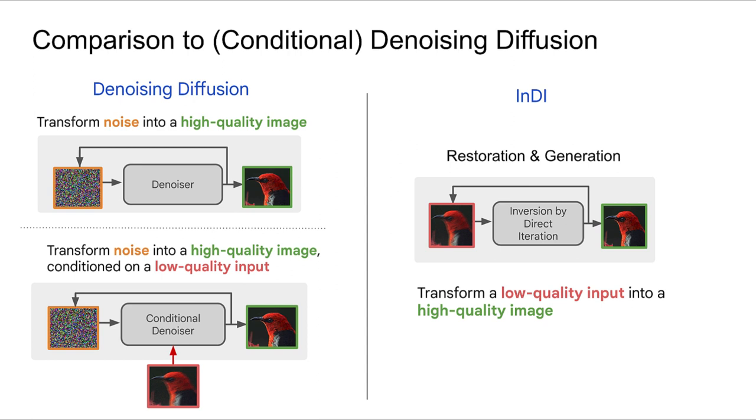DDPMs, or denoising diffusion models, are trained to generate images by removing noise little by little. Denoising diffusion models can be adapted to solve image restoration tasks by casting the restoration problem as one of conditional generation. In a conditional DDPM, the model learns to transform noise into a high-quality image conditioned on the low-quality input.